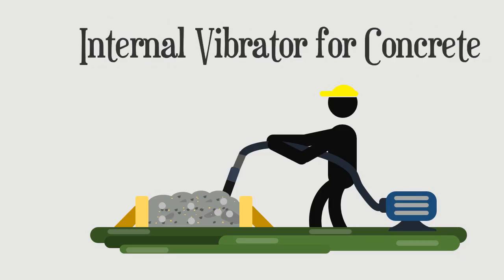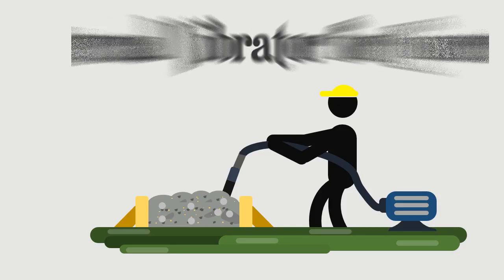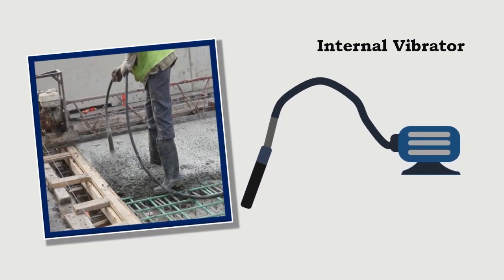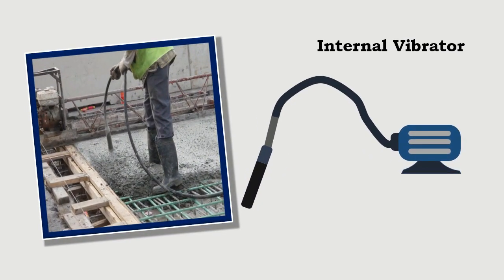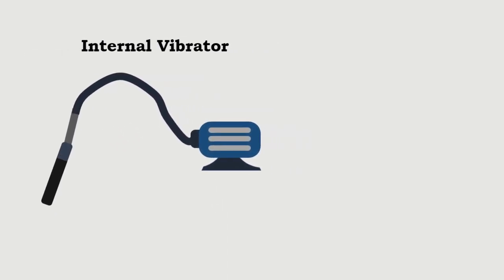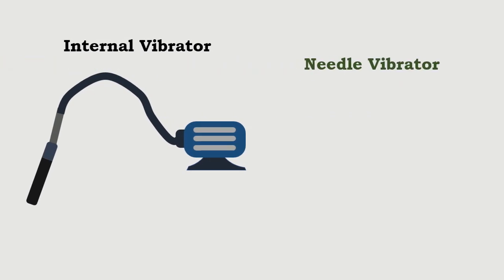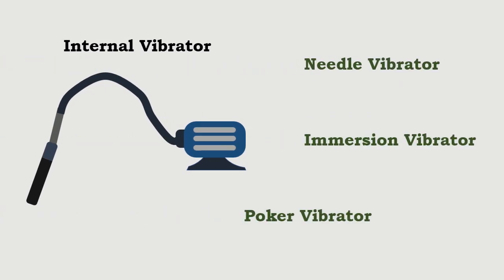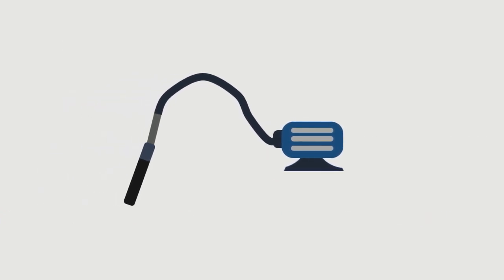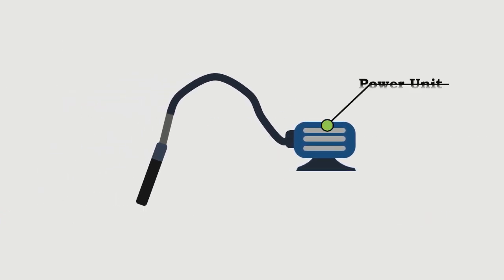Of all the vibrators used for compaction of concrete, the internal vibrator is most commonly adopted. The internal vibrator is also called a needle vibrator, immersion vibrator, or poker vibrator. The vibrator consists of a power unit, a flexible shaft, and a needle.